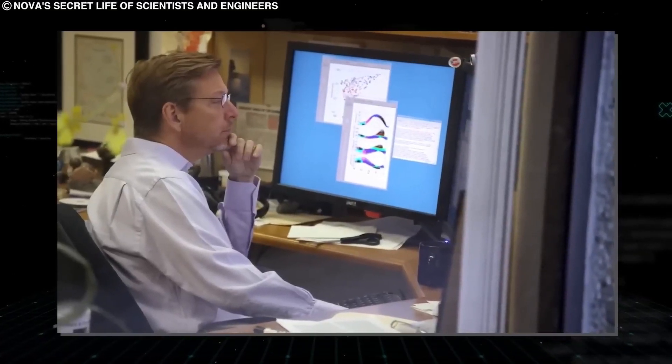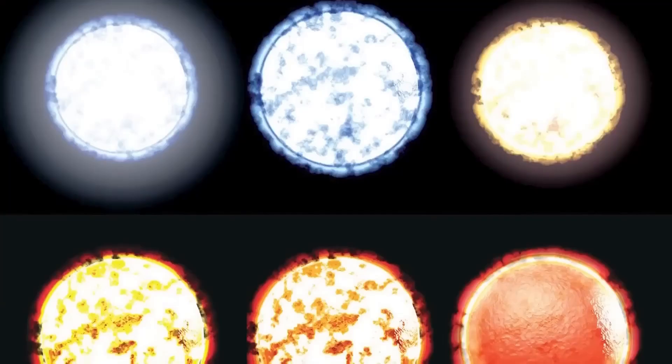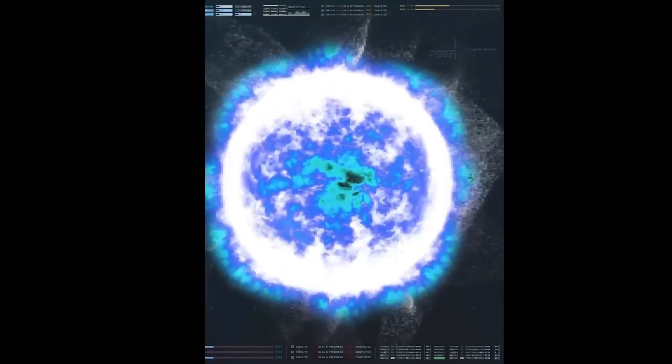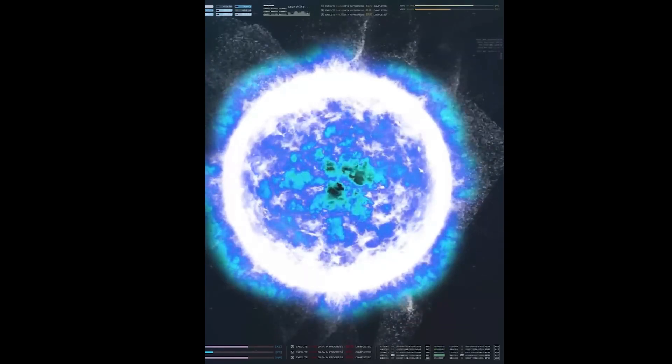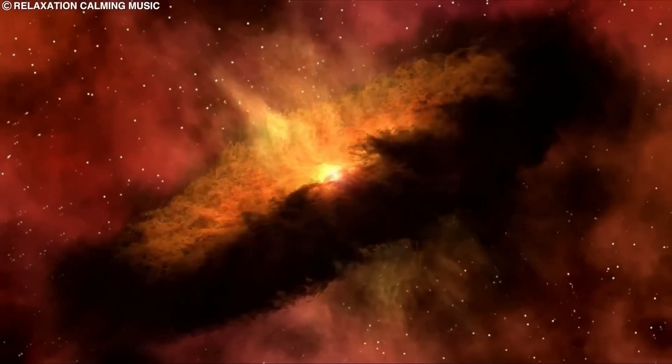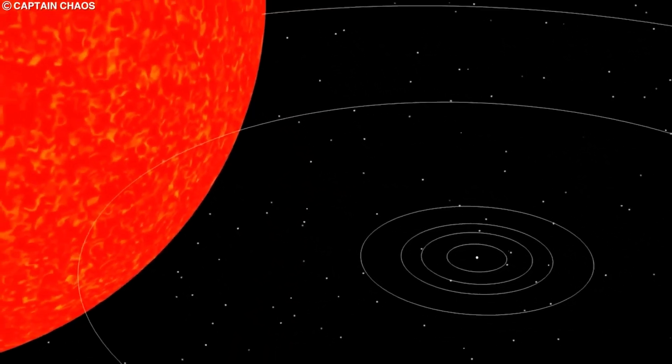Scientists have been pondering this question, and the answers are as mysterious as the star itself. Betelgeuse continues to keep us guessing with its never-ending pulsation. Some astronomers believe that this pulsation is a natural part of Betelgeuse's life cycle, a result of its internal dynamics and the interplay of its stellar layers. It's like the star's way of stretching its cosmic muscles and flexing its stellar prowess.